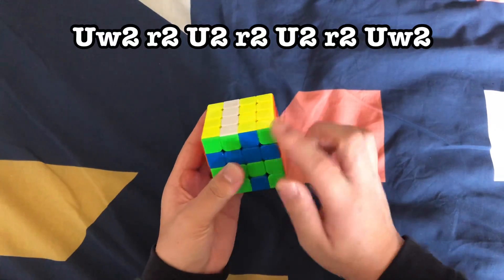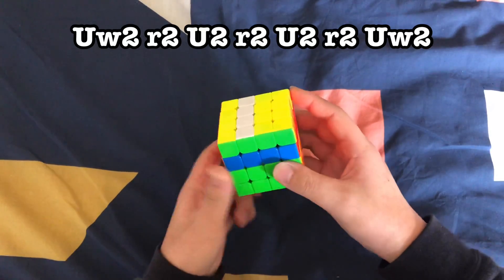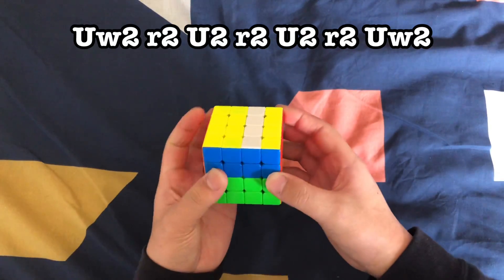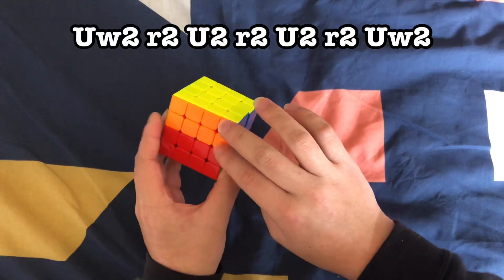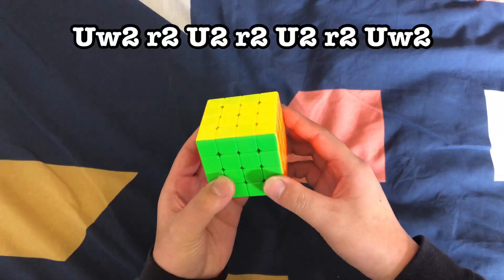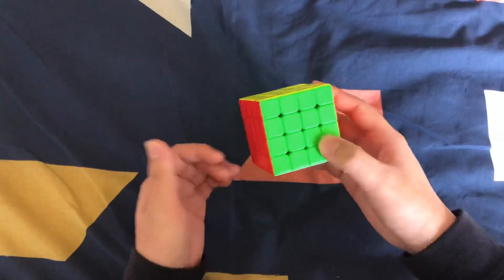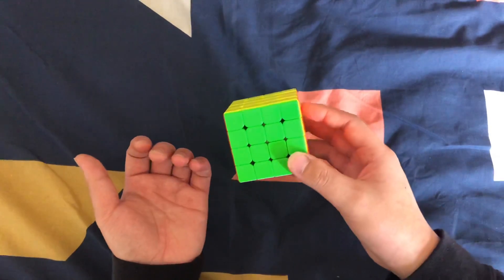Move this middle layer twice again. So I'm saying it's kind of like the H-perm. Spin it twice, move this layer twice, and move the two layers like this twice. And there you have it. You should have a solved cube or now a familiar 3x3 PLL case.